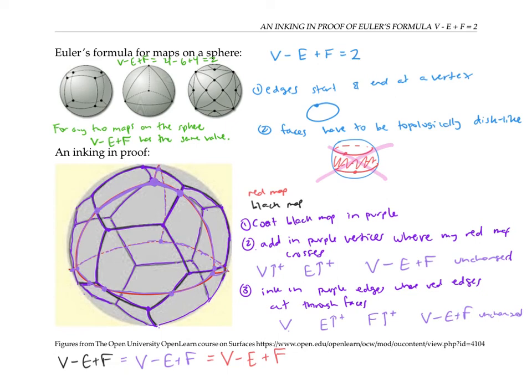So for any two maps on the sphere, V minus E plus F has the same value, and that value turns out to be 2.